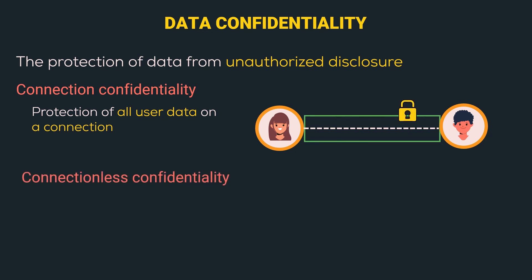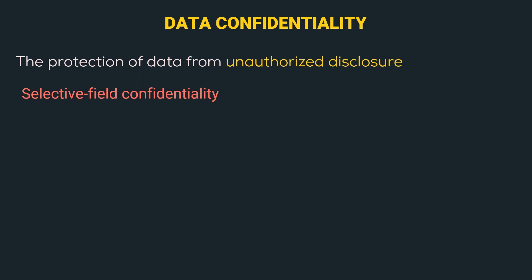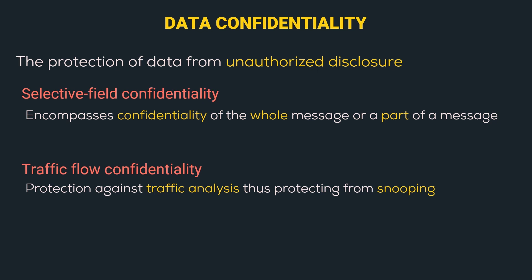The next type is Connectionless Confidentiality, which provides protection of all user data on a single data block. For example, suppose there is a data block consisting of three messages — this service protects that single data block. Next is Selective Field Confidentiality, which encompasses confidentiality of the whole message or a part of a message. Then Traffic Flow Confidentiality gives protection against traffic analysis, thus protecting from snooping.